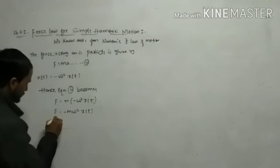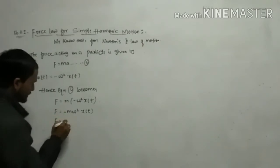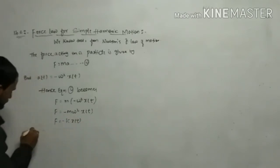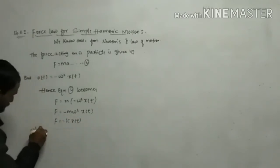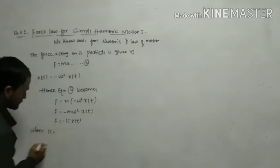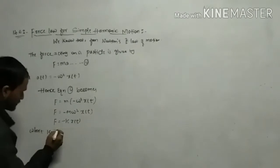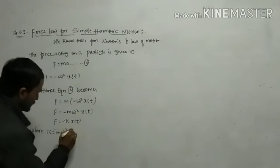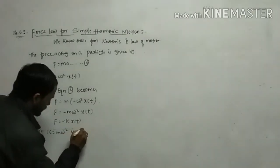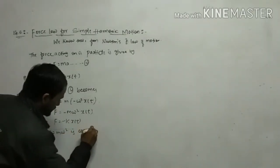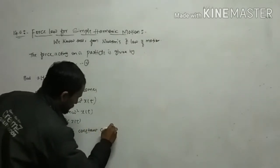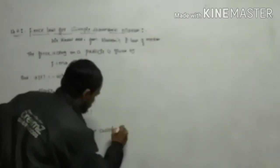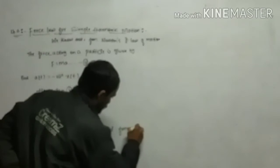So F is equal to minus k x(t), where k is equal to m omega squared. This constant k is what we are going to call the force constant.